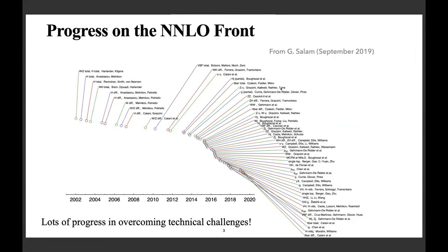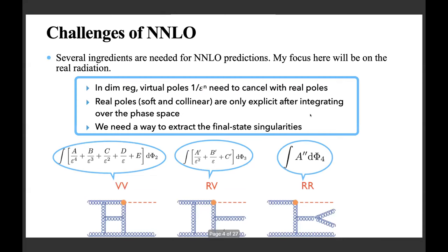This is a plot made in 2019 by Gavin that summarizes nicely the progress on the NNLO front. Somewhere between 2015 and now there was an explosion of results thanks to many technical advances. One thing that stands out is that we have many two-to-two results — most of the important ones have been provided for processes with one jet in the final state, which tend to have a more complicated infrared structure.